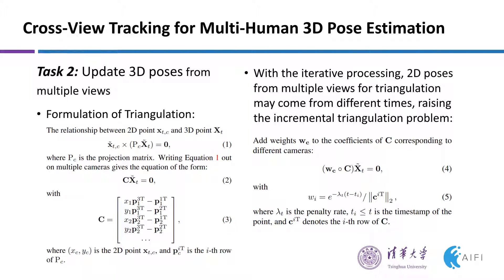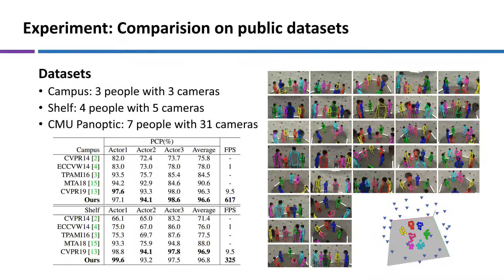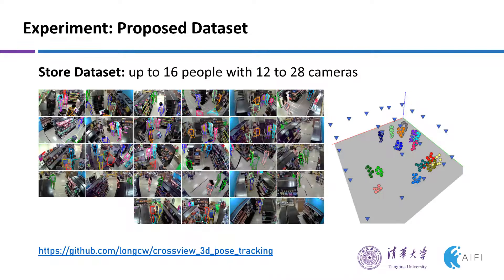With the iterative processing, 2D poses of multiple views may come from different times, raising the incremental triangulation problem. We compare our method with others on 3 public datasets. It can leverage the full 31 cameras of the CMU Panoptic dataset. We also proposed a new large-scale dataset with 28 cameras and over 16 people.